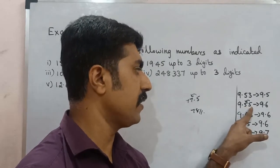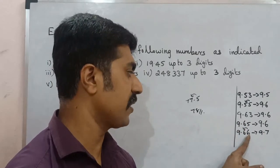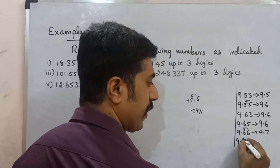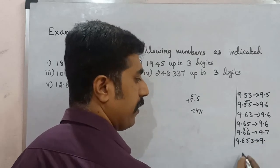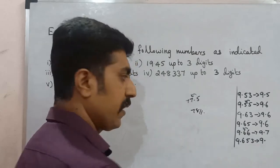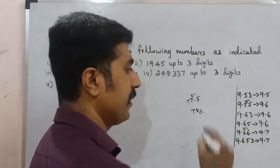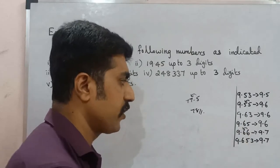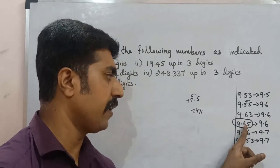For 9.55: the last digit is 5, and the preceding digit 5 is odd, so we add 1, giving 9.6. For 9.65: the preceding digit 6 is even, so we drop the 5 and leave it as 9.6. Follow this rule: if last digit is 5 and the preceding digit is even, drop it; if odd, add 1.